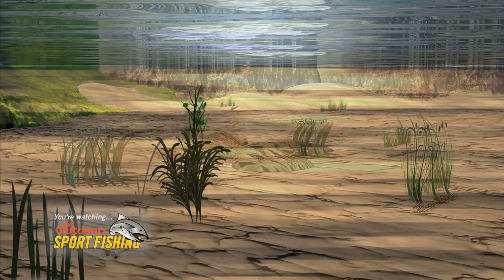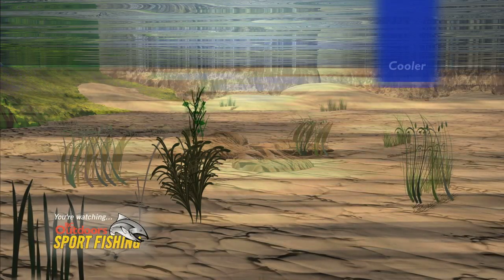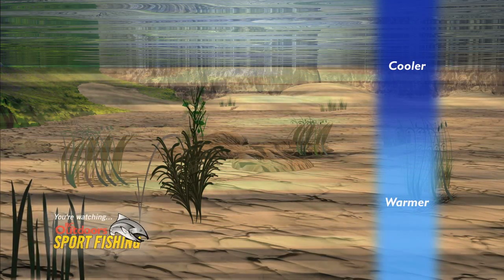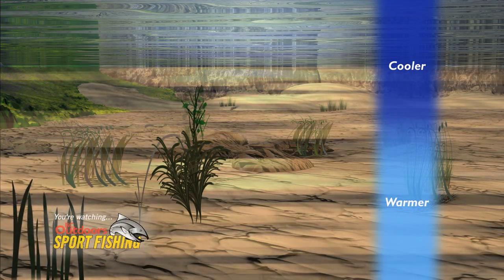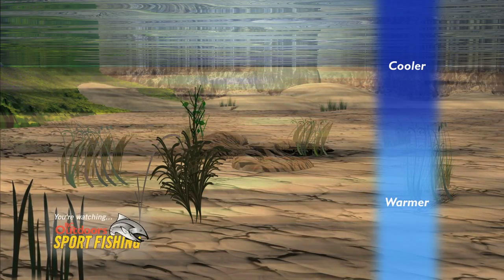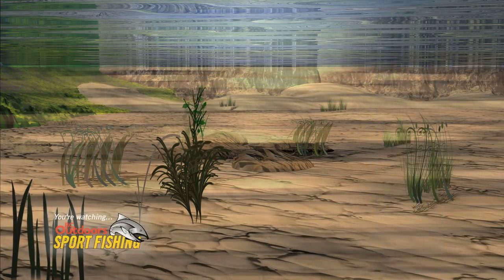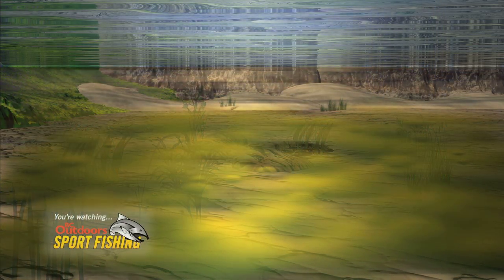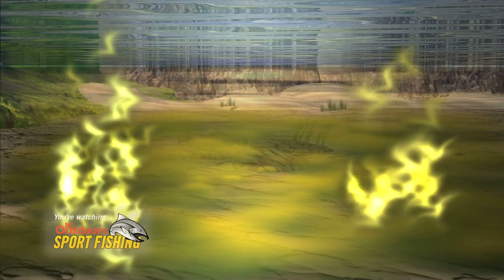What happens is: the day the ice comes off the lake, the water at the surface is colder than the water at the bottom. That's because all winter long, the vegetation at the bottom of the lake is decomposing, and in that process it gives off heat, which warms up the water.